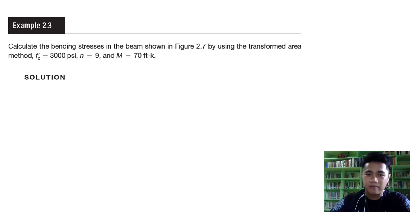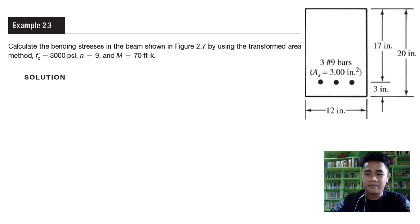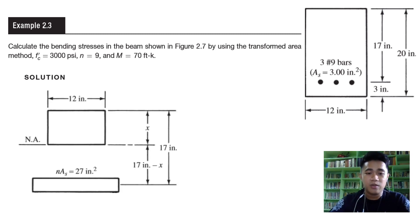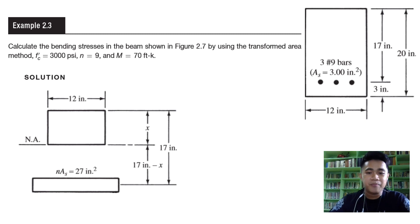Calculate the bending stresses in the beam shown. This is our beam — it's 12 by 20 inches and we have three Number 9 bars, so the total area of steel is 3 inches squared. We have to calculate the bending stress using a transformed area, with the given parameters: f'c = 3000 psi, n = 9, and moment = 70 foot-kips. I'll be discussing what n means shortly.